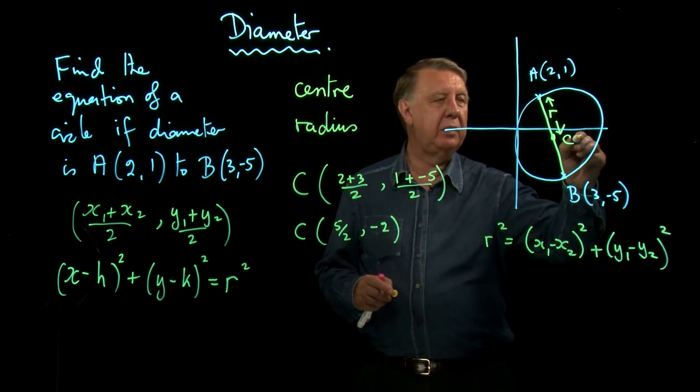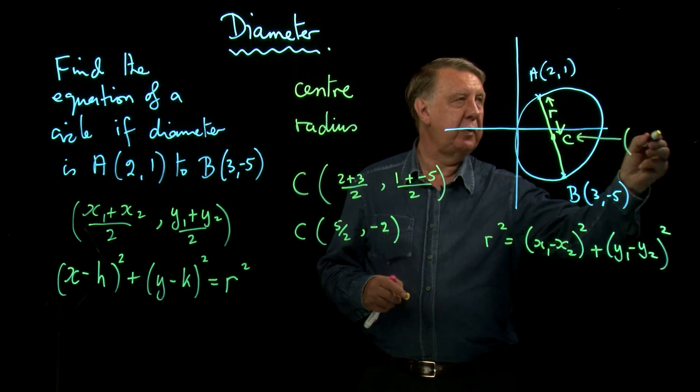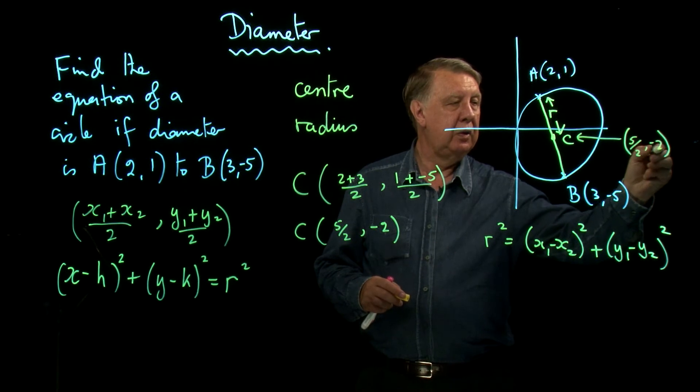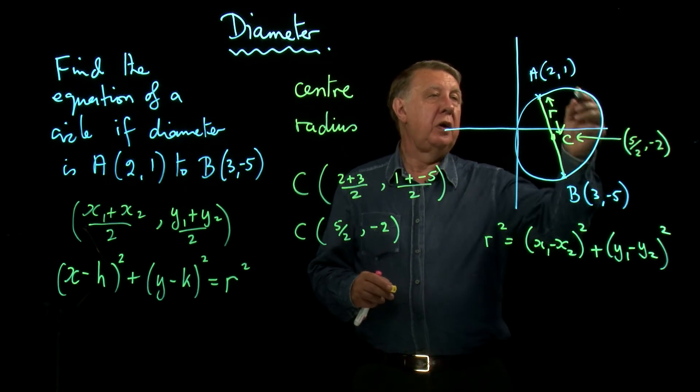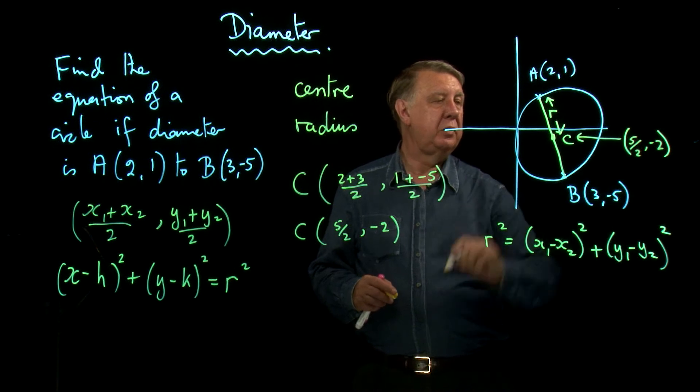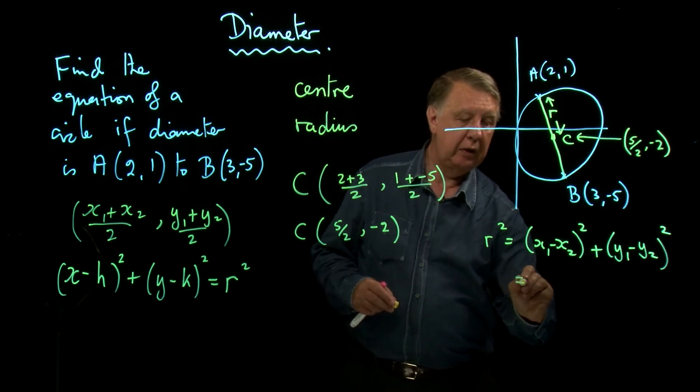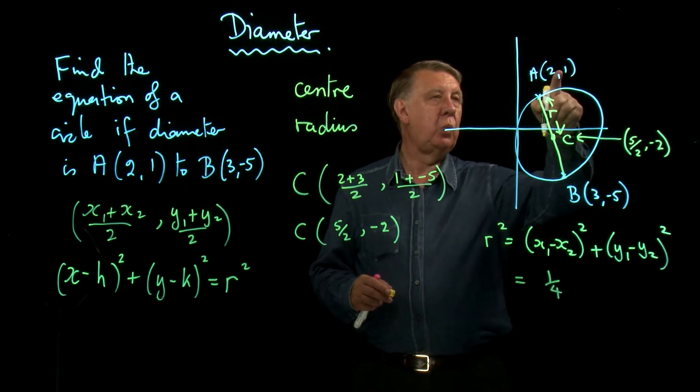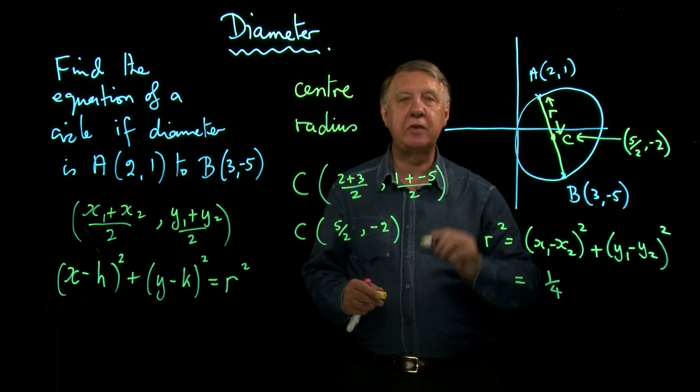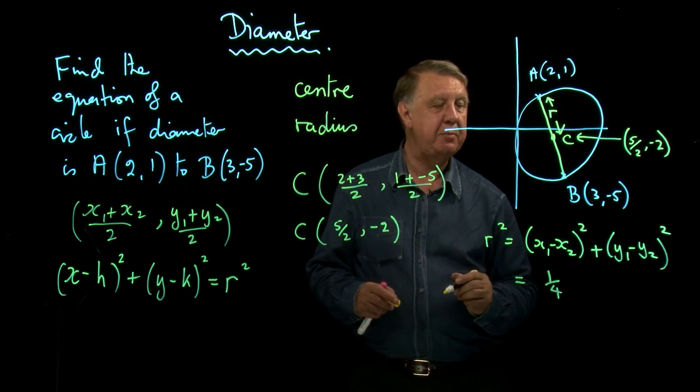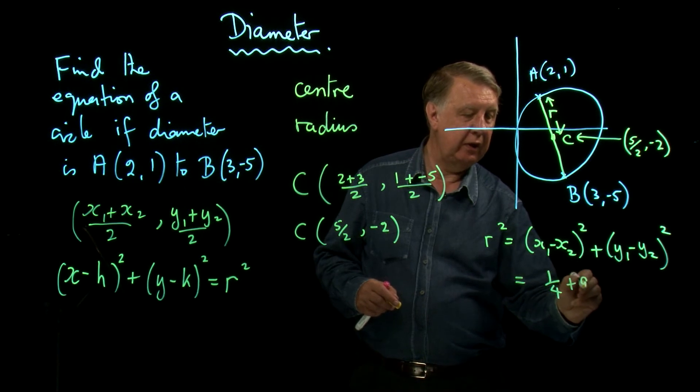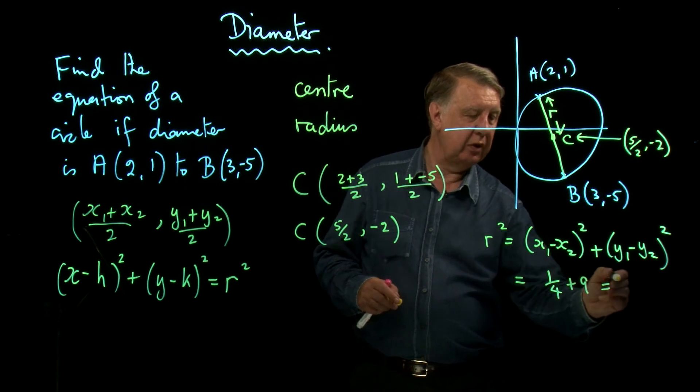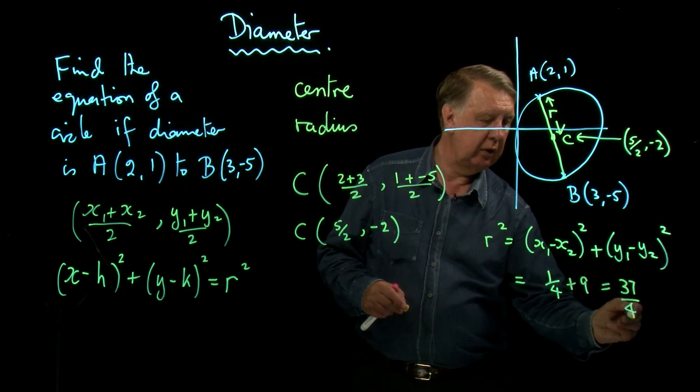So let's pop in the coordinates of C just so that we've got them in front of us. So that's 5 over 2, negative 2. So 2 take away 2 and a half is a half. A half squared is a quarter. 1 take away negative 2, 3 squared is 9. So R squared is 37 over 4.